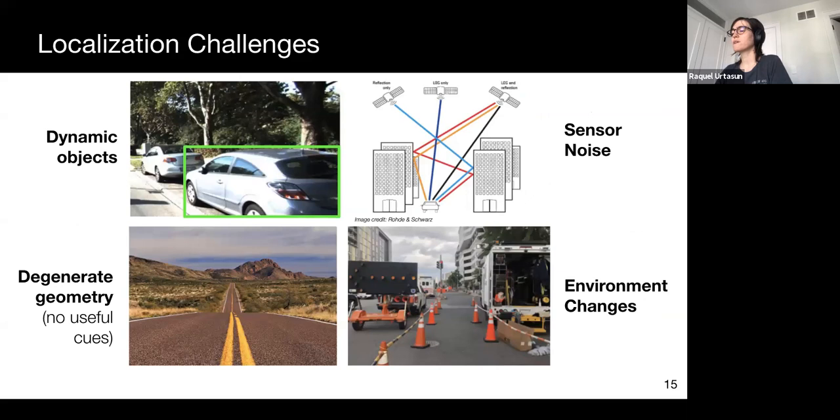Localization systems must be robust to the presence of dynamic objects in the scene, as these are irrelevant for localization. Geometrically degenerate areas, areas which lack distinct geometric cues, can also be problematic. These areas are challenging for geometric localizers, since observations can't be uniquely aligned to the map.